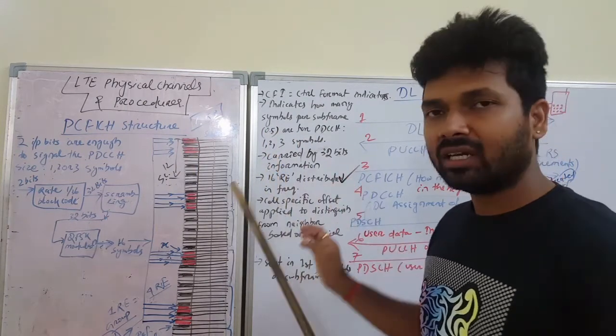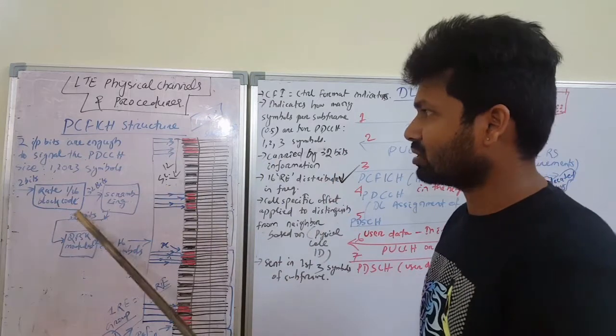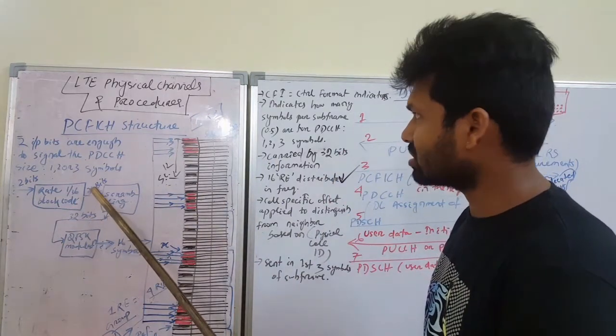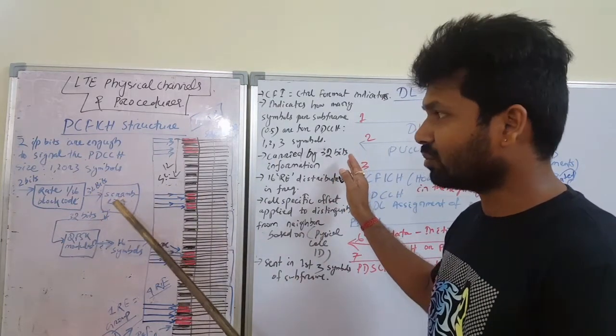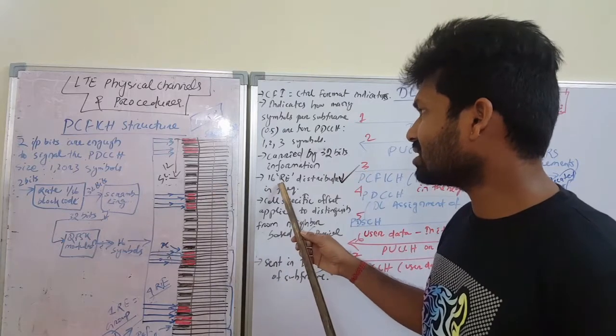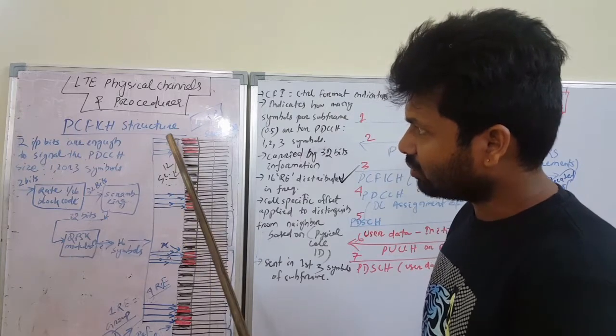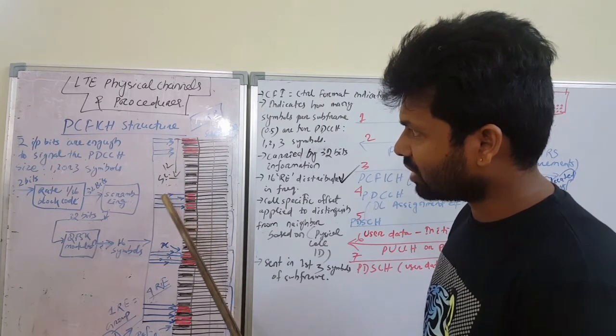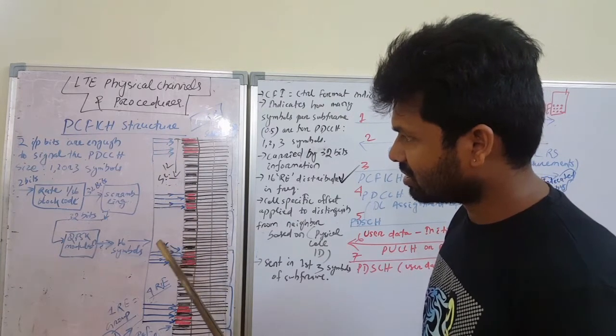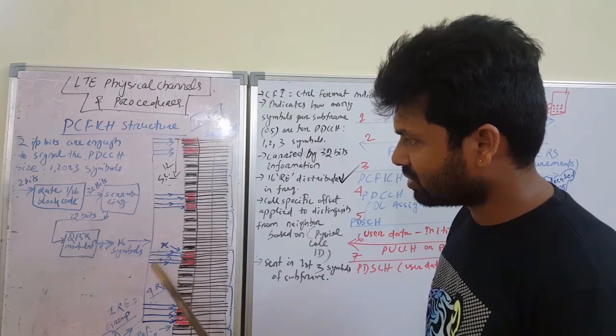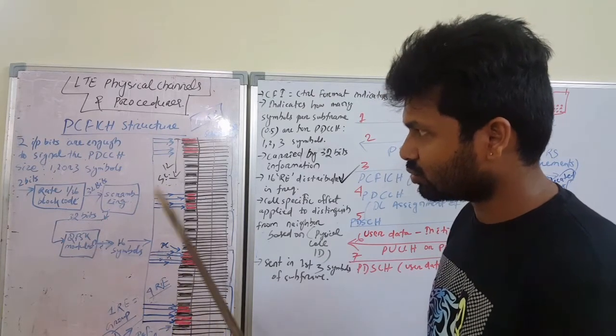This is carried by 32-bit information - 32 bits information and 16 resource elements distributed in frequency domain. 1, 2, 3, 4, 5, 6, 7, 8, 9, 10, 11, 12, and the last four - total 16 number of resource elements.